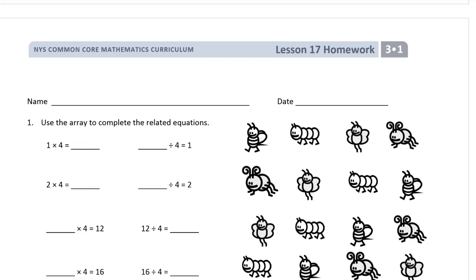Welcome to the homework for Lesson 17 in 3rd grade module 1. Do your name first. Make sure you get in there before you forget it. You won't remember it later. Number 1. Use the array to complete the related equations.